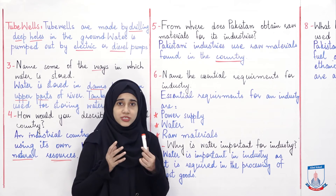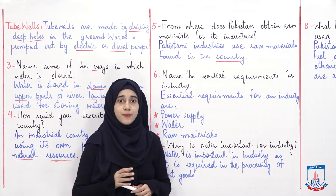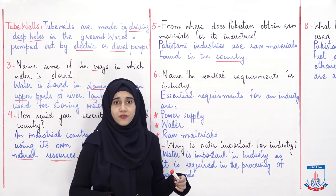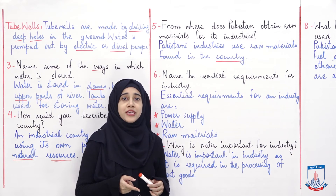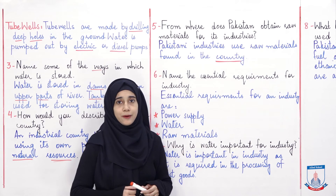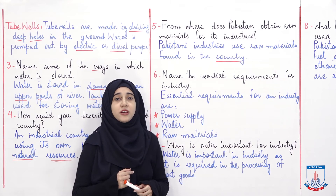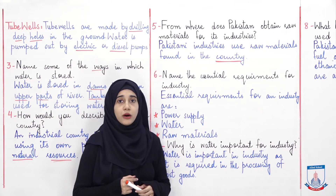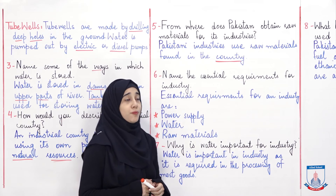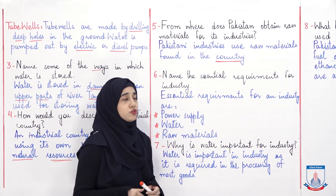Maine during the chapter bhi aapko bataya tha ke agar kisi country mein raw materials na hon aur unhe doosari country se mangwana pade, toh yeh bohat hi expensive process hota hai. Lekin agar aapki apni country mein raw materials maujood hain, toh yeh aapki industries ke liye, aapki factories ke liye, aapki karkhano ke liye ek achhi baat hoti hai. Kyun ke phir joh process hota hai raw materials ka unko refine karne ka, woh thoda sasta par jata hai, as compared to agar aapne raw materials kisi doosare mulk se mangwane hon.